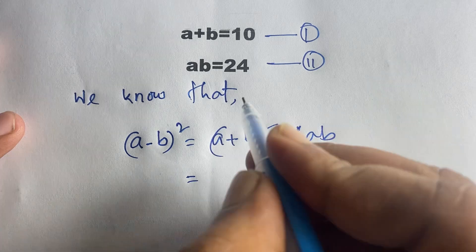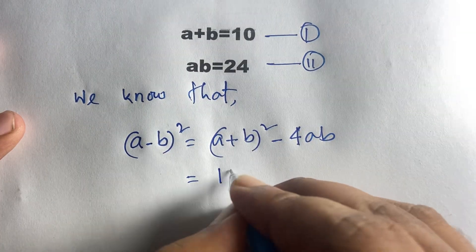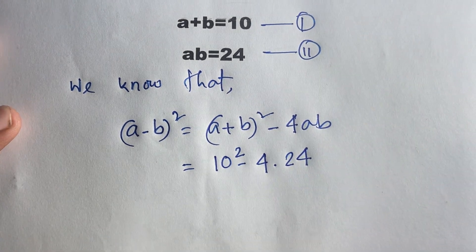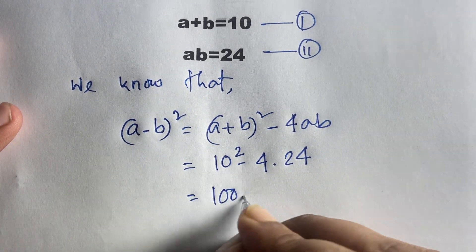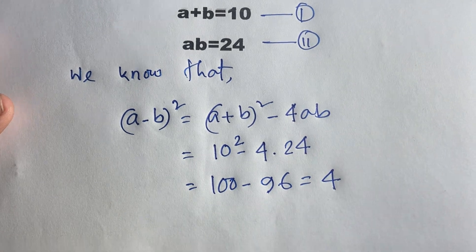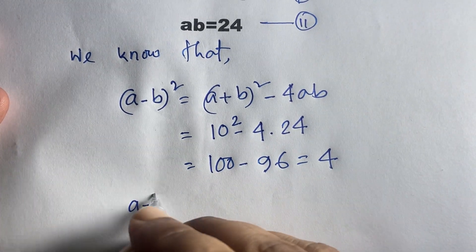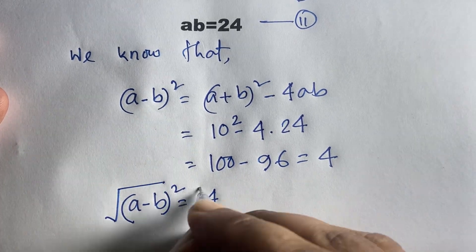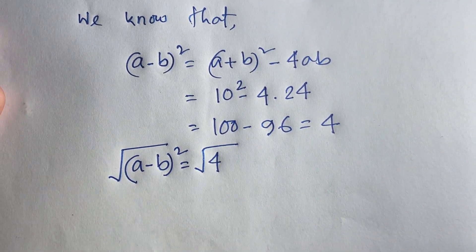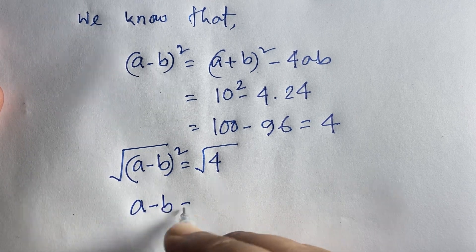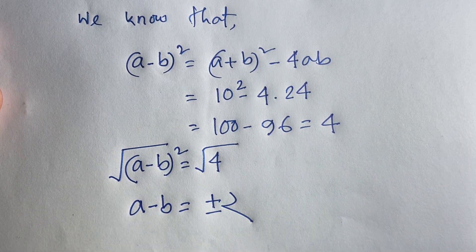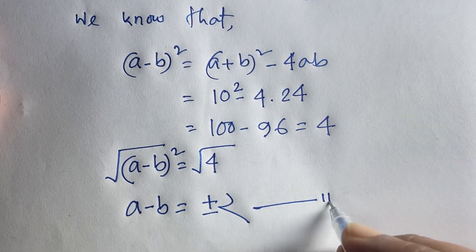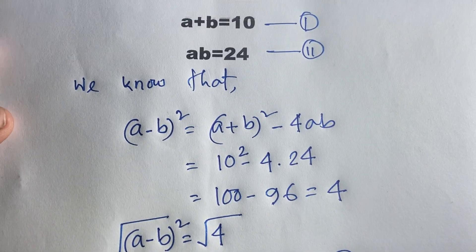Since a plus b is equal to 10, we substitute: 10 squared minus 4 times 24, which gives 100 minus 96, which is 4. So (a minus b) squared is equal to 4. Taking square roots on both sides, a minus b is equal to plus or minus 2. This is our third equation.